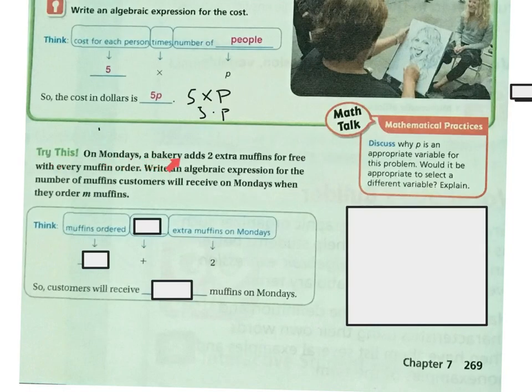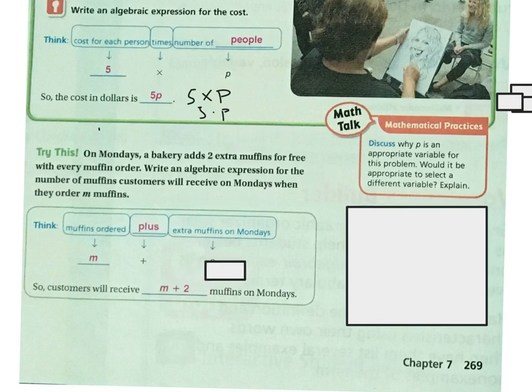Try this. On Mondays, a bakery adds two extra muffins for free with every muffin order. Write an algebraic expression for the number of muffins customers receive on Mondays when they order M muffins. The muffins ordered is M, plus the extra muffins on Monday, which is 2. So customers will receive M plus 2.